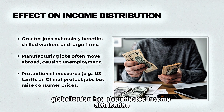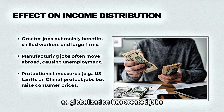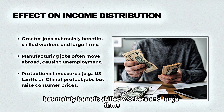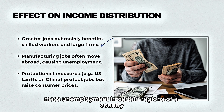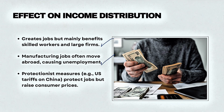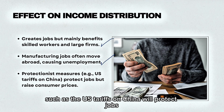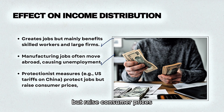Globalization has also affected income distribution. While globalization has created jobs, it mainly benefits skilled workers and large firms. Manufacturing jobs often move abroad, causing mass unemployment in certain regions. Protectionist measures, such as US tariffs on China, will protect jobs but raise consumer prices.